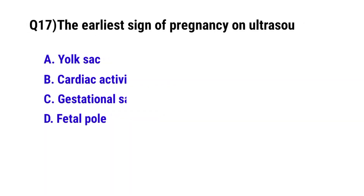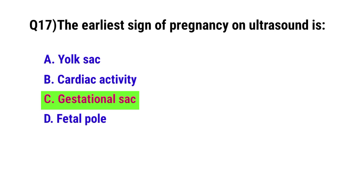Question No. 17: The earliest sign of pregnancy on ultrasound is? The correct option is C: Gestational sac.